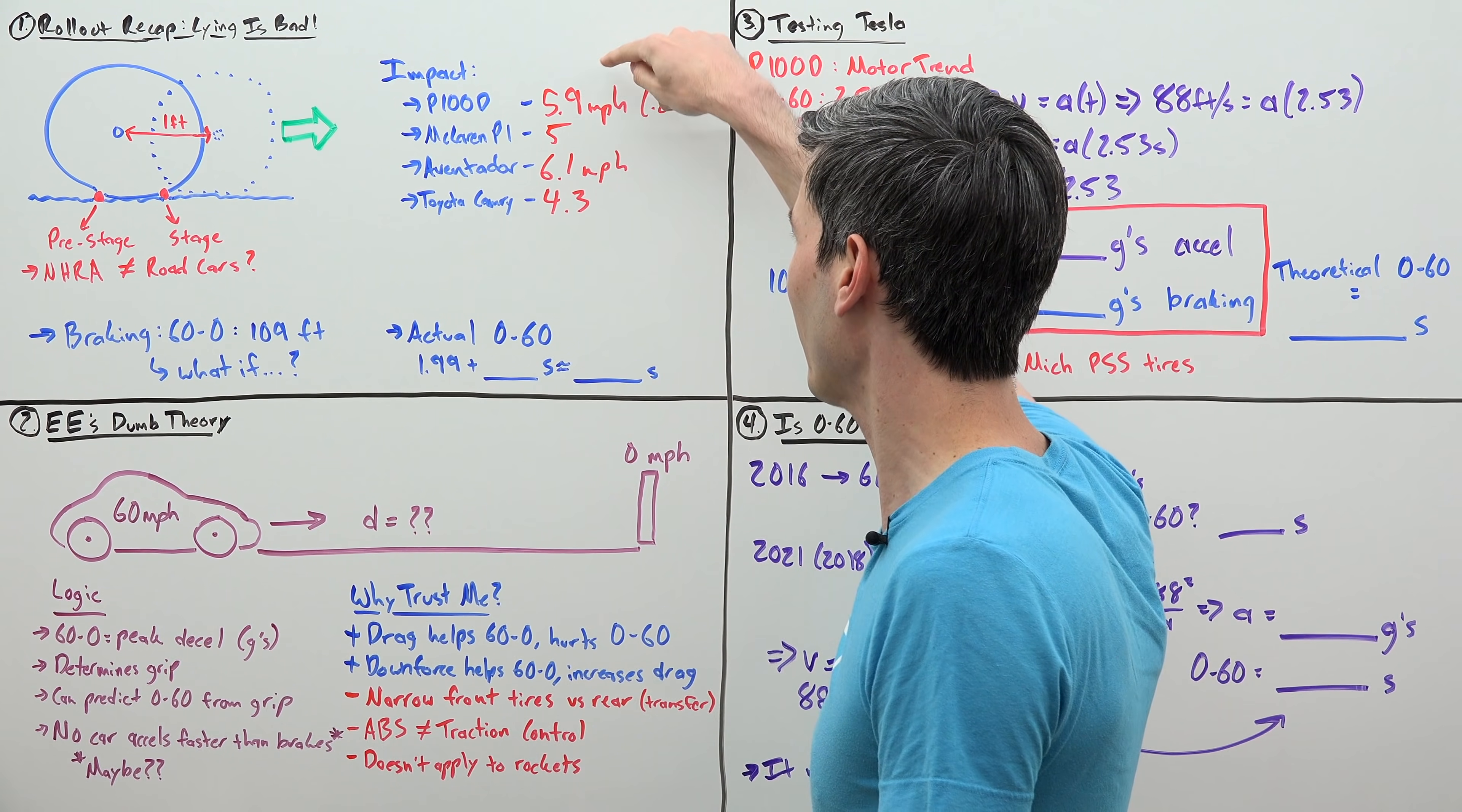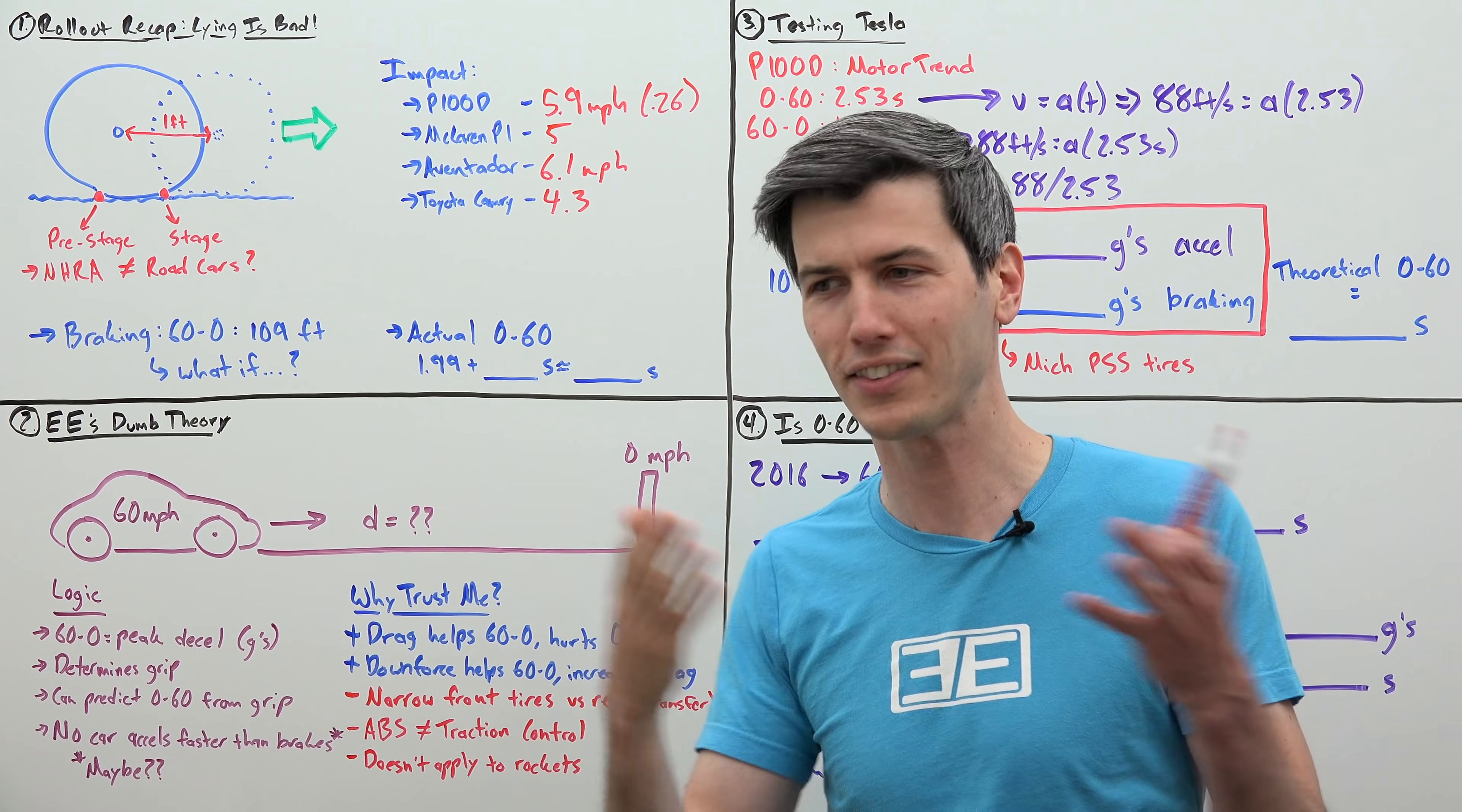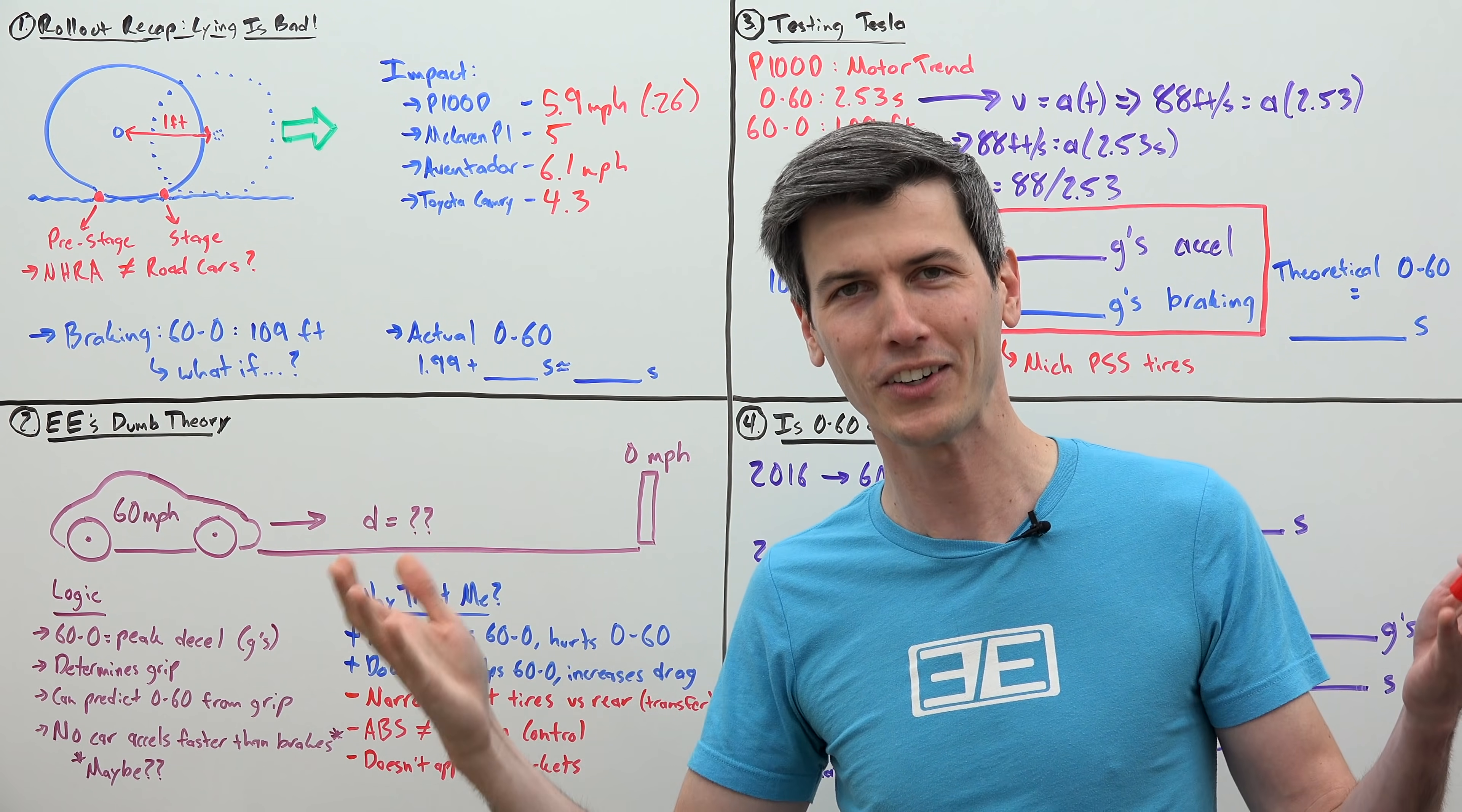So this is not a 0-60. In the case of the Tesla, it's more like a 6-60, which we can all agree, 6-60 and 0-60 are very different measurements, correct?